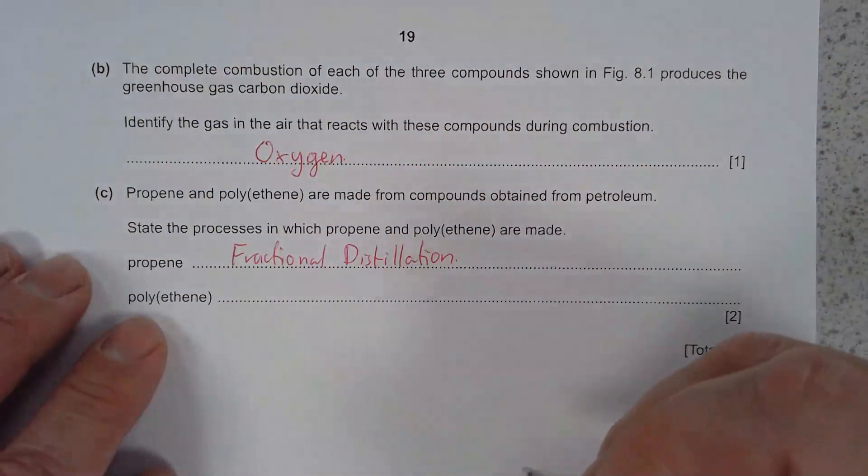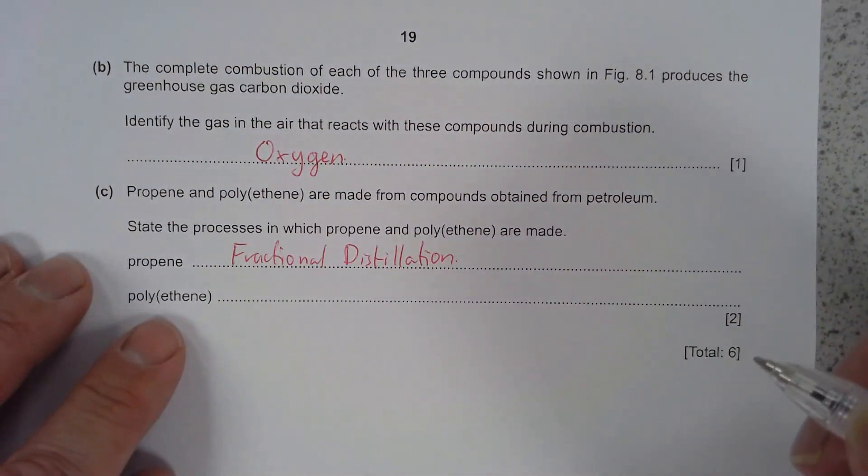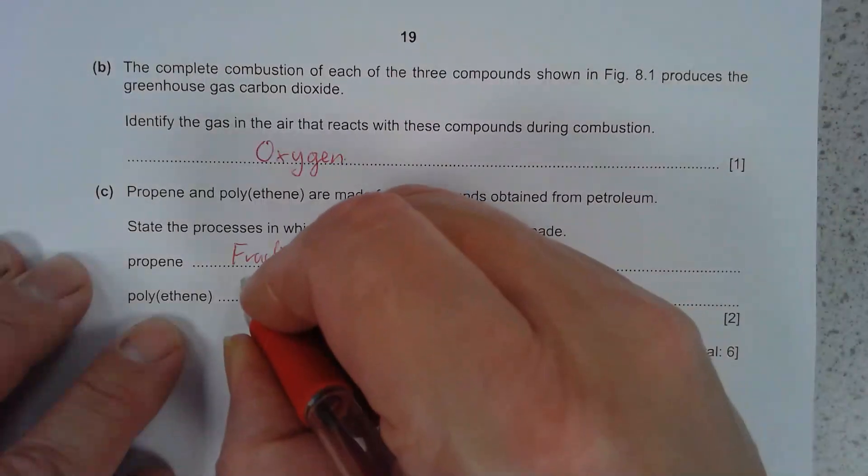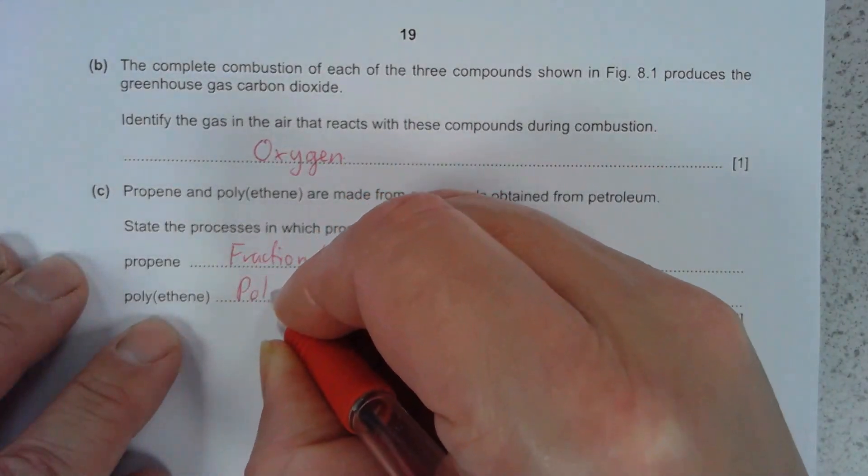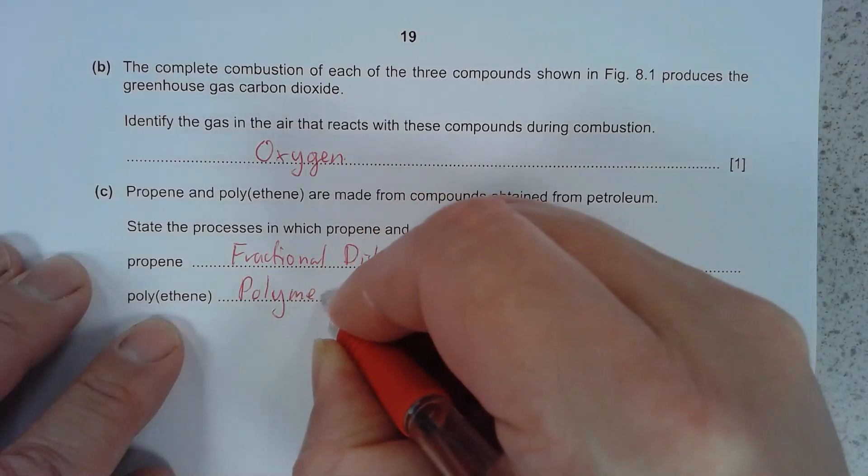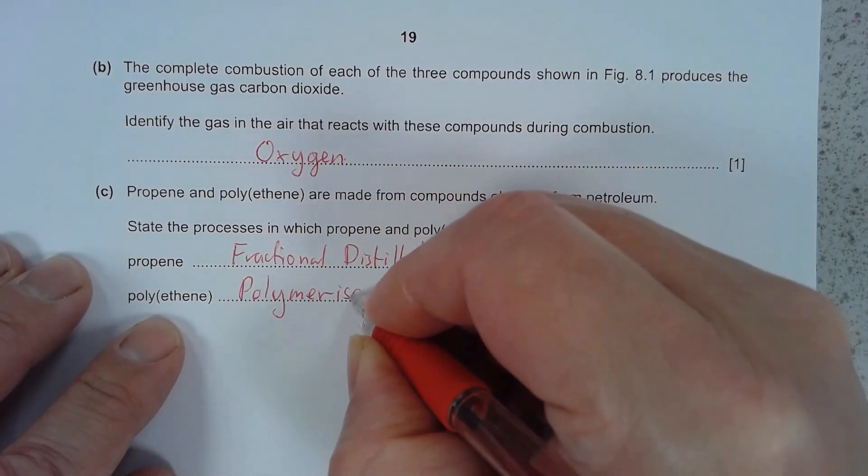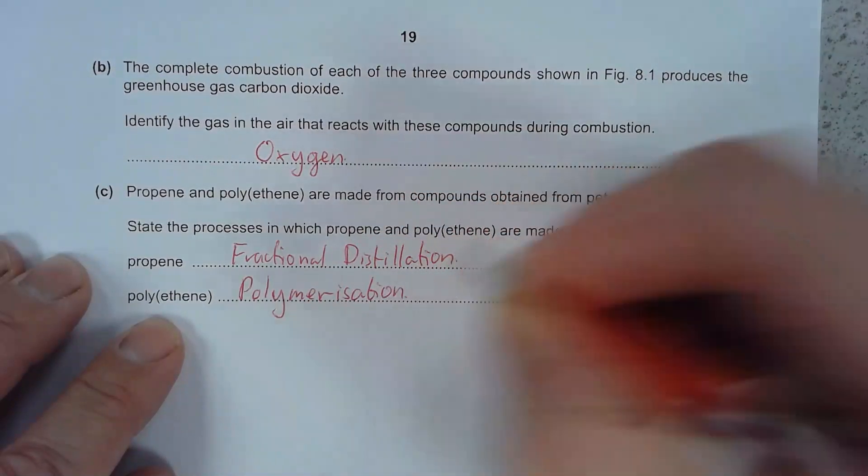And polythene is then we take the ethene and we polymerize it. So it's polymerization. And that's it.